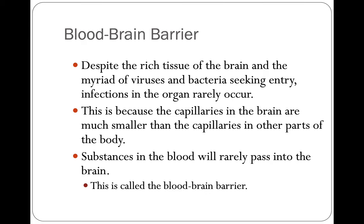Despite the rich tissue of the brain and the myriad viruses and bacteria seeking entry, infections in the organ rarely occur. This is because the capillaries in the brain are much smaller than elsewhere in the body — substances in the blood will rarely pass into the brain. This is called the blood-brain barrier. We don't want anything to cross the blood-brain barrier, and most antibiotics will not get into your brain. So when somebody has meningitis, we have to treat them with special medications that will cross the blood-brain barrier.